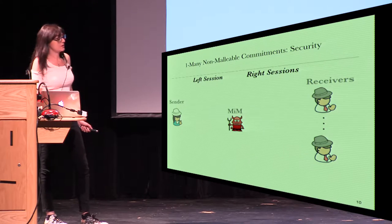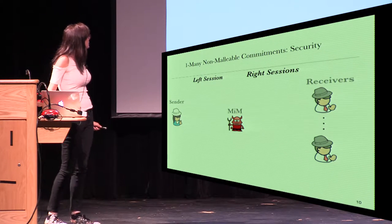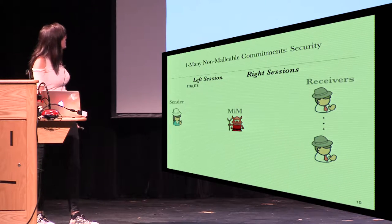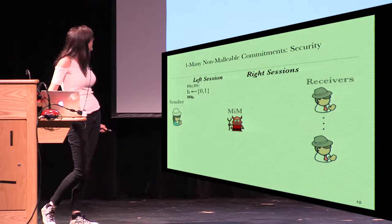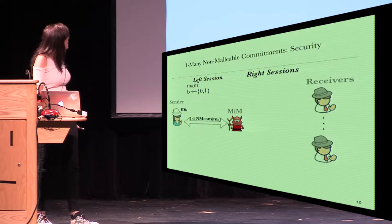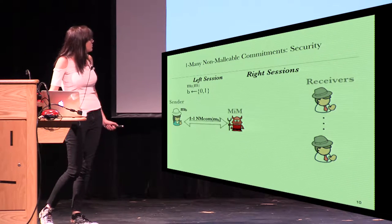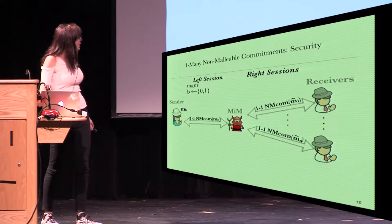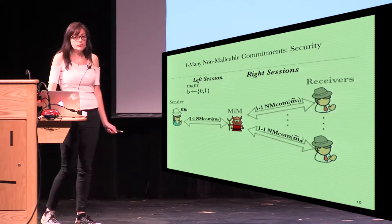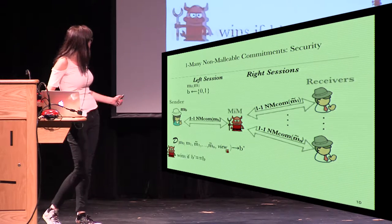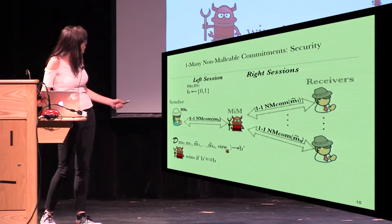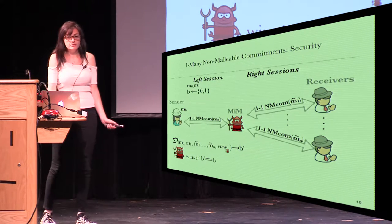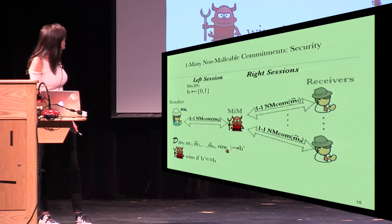Let's talk now about the security game. The man in the middle chooses two messages m0 and m1. The challenger chooses a bit b, and the sender commits to mb. Now the man in the middle can commit to n messages on the right session. It is a successful man in the middle if the distinguisher, on input m0 and m1 and all the messages committed in the right session and the view of the man in the middle, can tell apart the correct bit b.